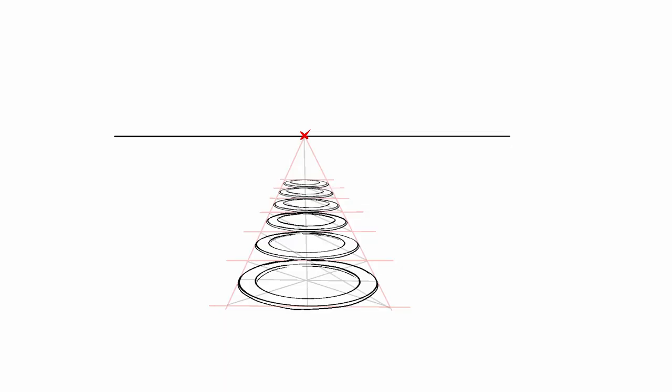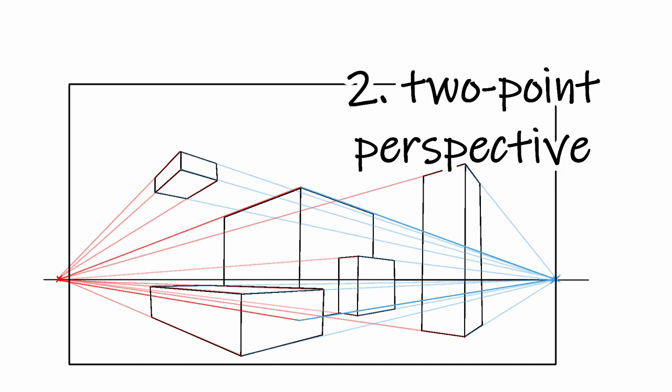One important note before moving to two-point perspective: circles become ovals when foreshortened, and the closer they get to the vanishing line the flatter they get.